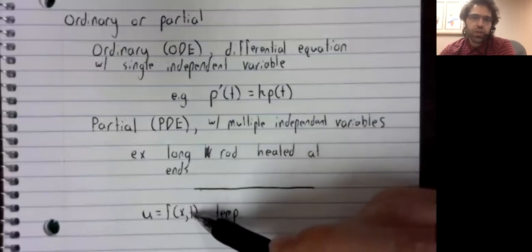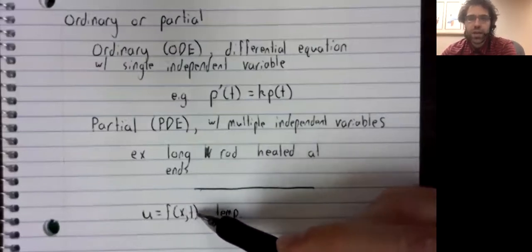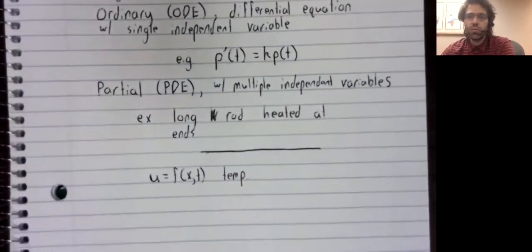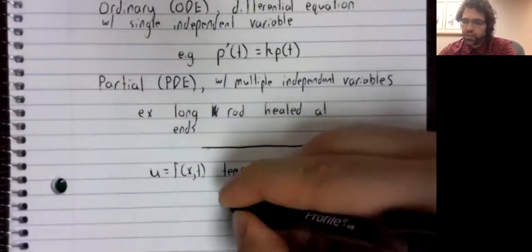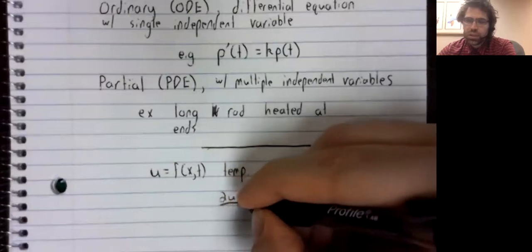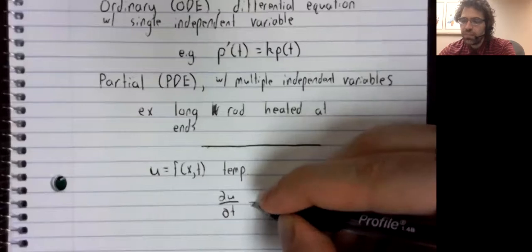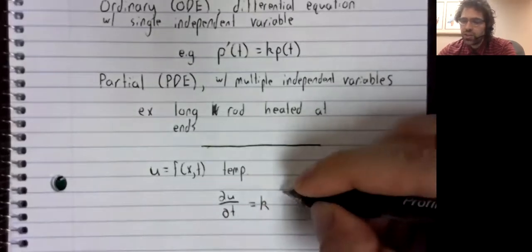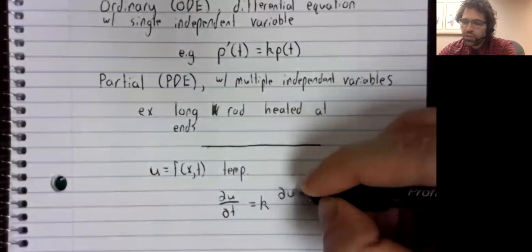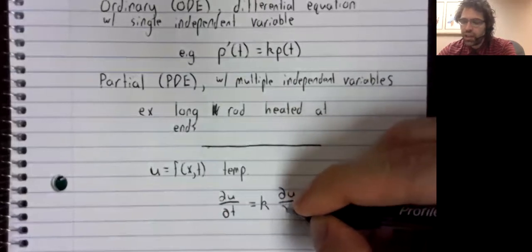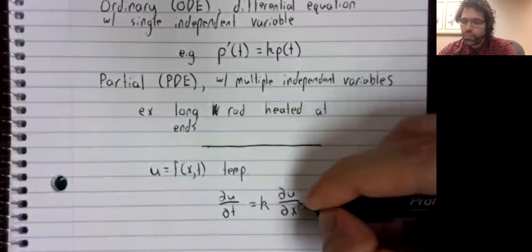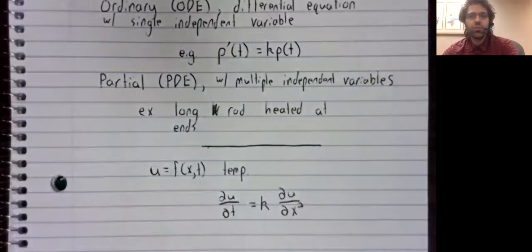And of course, the temperature is changing with time as the rod heats up. So you need to keep track of time as well. You have these two variables, and it turns out that the partial derivative of u with respect to t is a constant k times the second partial derivative of u with respect to x.